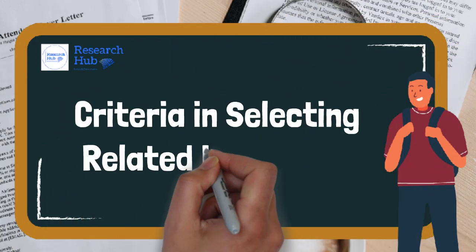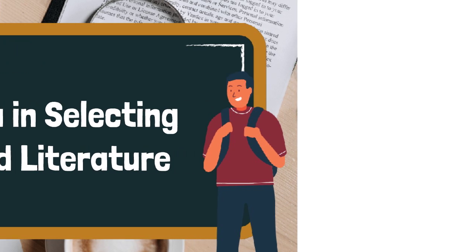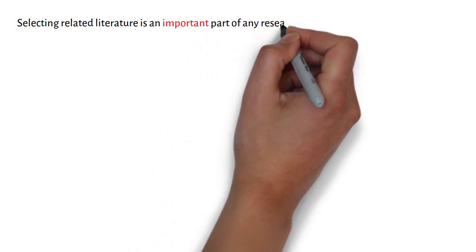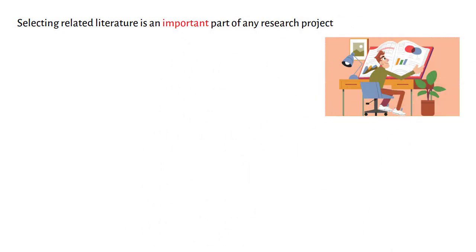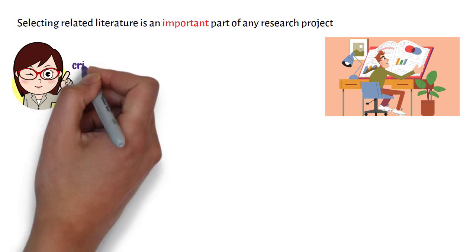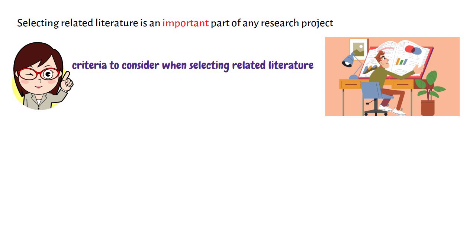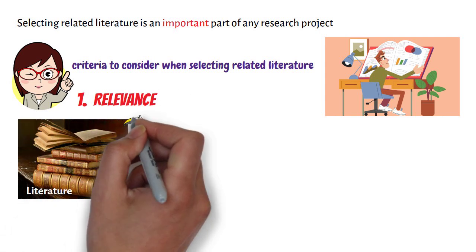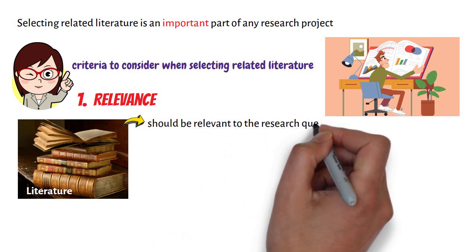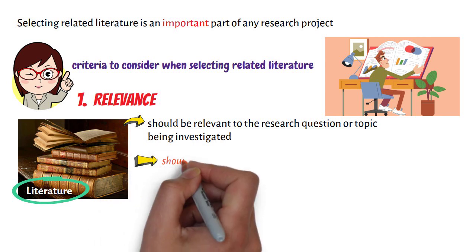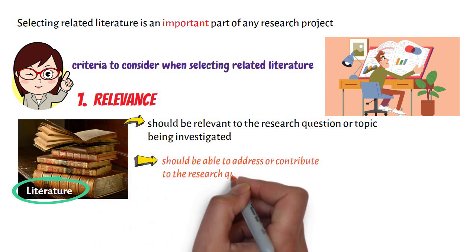Criteria in selecting related literature. Selecting related literature is an important part of any research project. The following are some criteria to consider when selecting related literature. First, in terms of relevance: literature should be relevant to the research question or topic being investigated. The selected literature should be able to address or contribute to the research question.